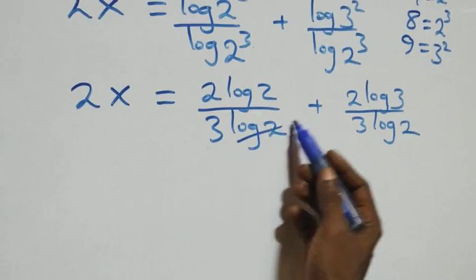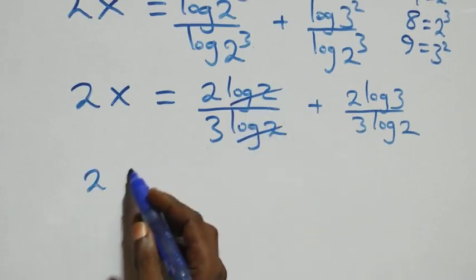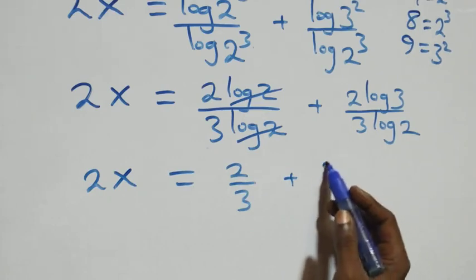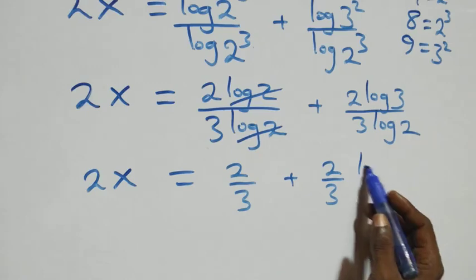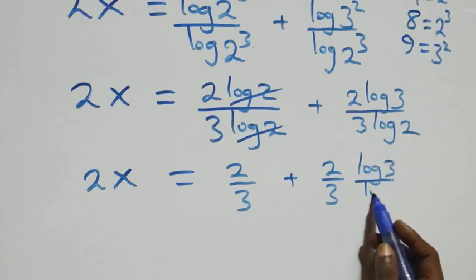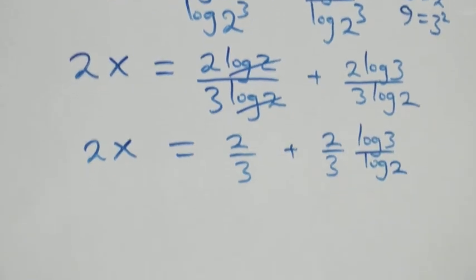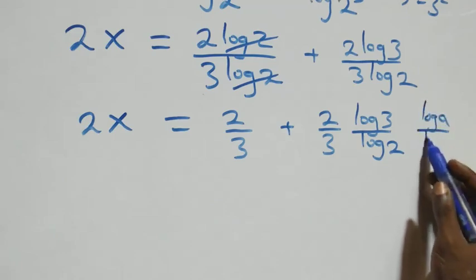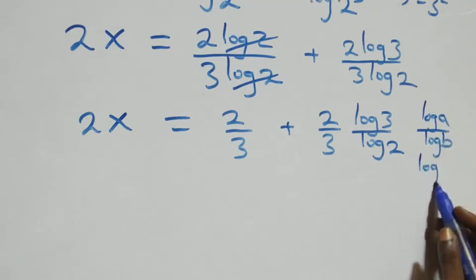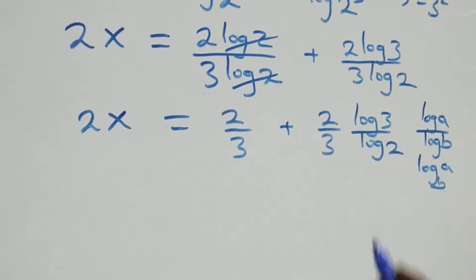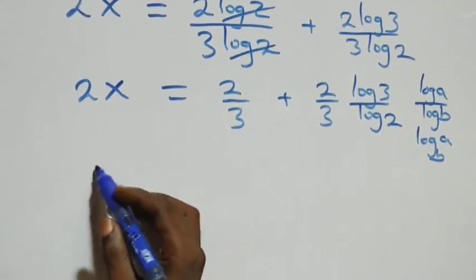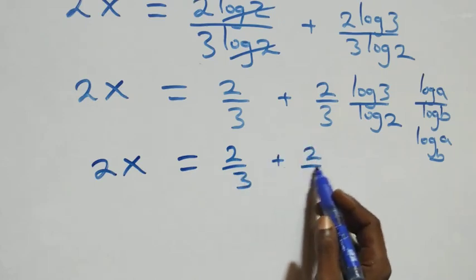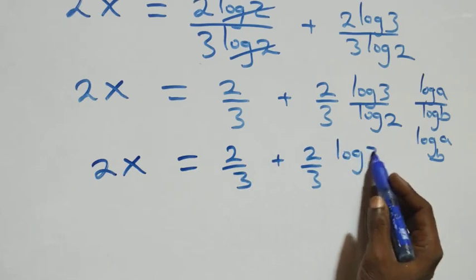Here log 2 cancels with log 2. We have 2x equals 2 over 3 plus 2 log 3 over 3 log 2. We can write this as 2 over 3 plus 2 over 3 times log 3 over log 2. Applying the change of base formula — log a over log b equals log a to base b — we have 2x equals 2 over 3 plus 2 over 3 times log 3 base 2.